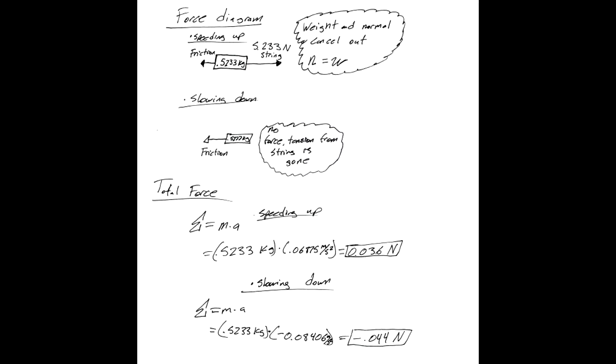For the total force, we know that F equals ma. For speeding up, we did force equals 0.5233 kilograms times 0.06875 meters per second squared, which equals 0.036 newtons. For slowing down, we have the same mass of 0.5233 kilograms times negative 0.08406 meters per second squared, which equals negative 0.044 newtons.